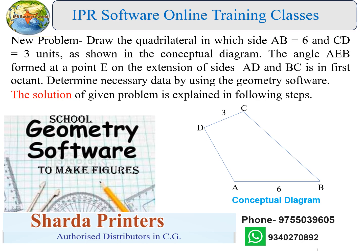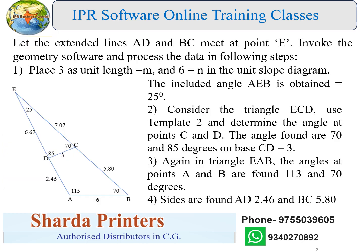Let the extended lines AD and BC meet at point E. Invoke the geometry software and process the data in the following steps. Place 3 as unit length equal to M and 6 equal to N in the unit slope diagram.